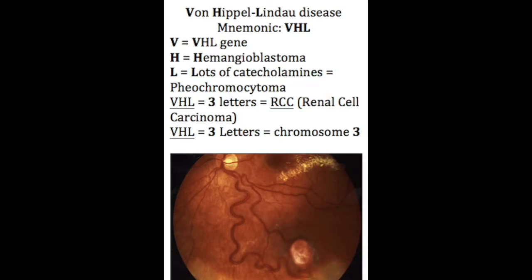Von Hippel-Lindau disease is caused by an autosomal-dominant mutation in a tumor suppressor gene. The gene's name is VHL, which should be easy to remember. But what chromosome is it on? It is on chromosome 3.